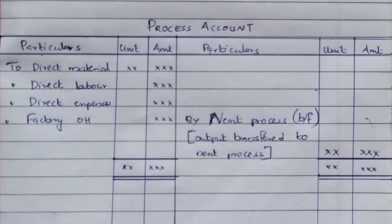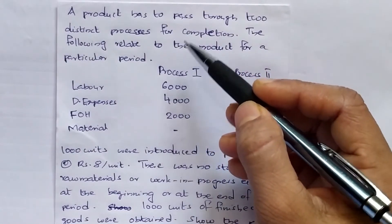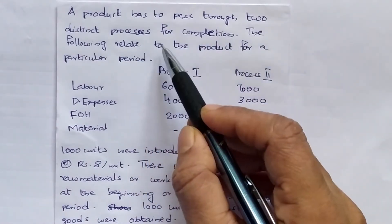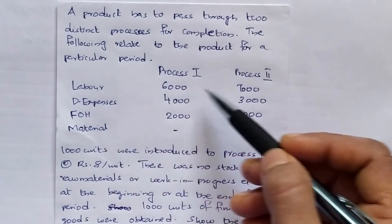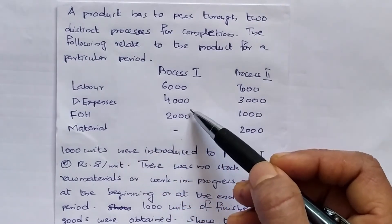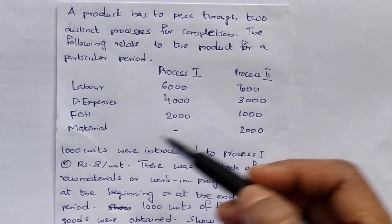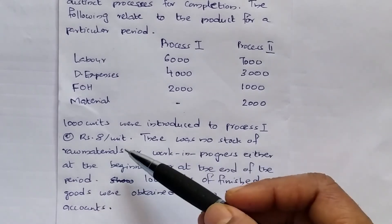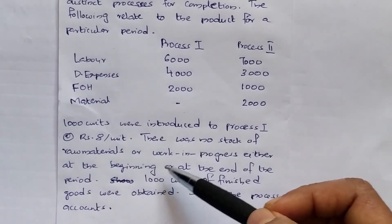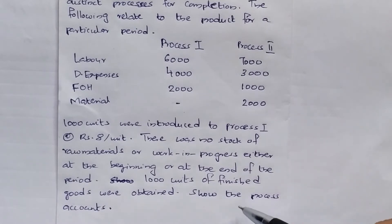Now we will prepare the process account with a worked example. The problem states: 1,000 units have been released to Process 1 at the rate of 8 per unit. There was no stock of raw materials or work in progress either at the beginning or at the end of the period. 1,000 units of finished goods were obtained. Show the process account.